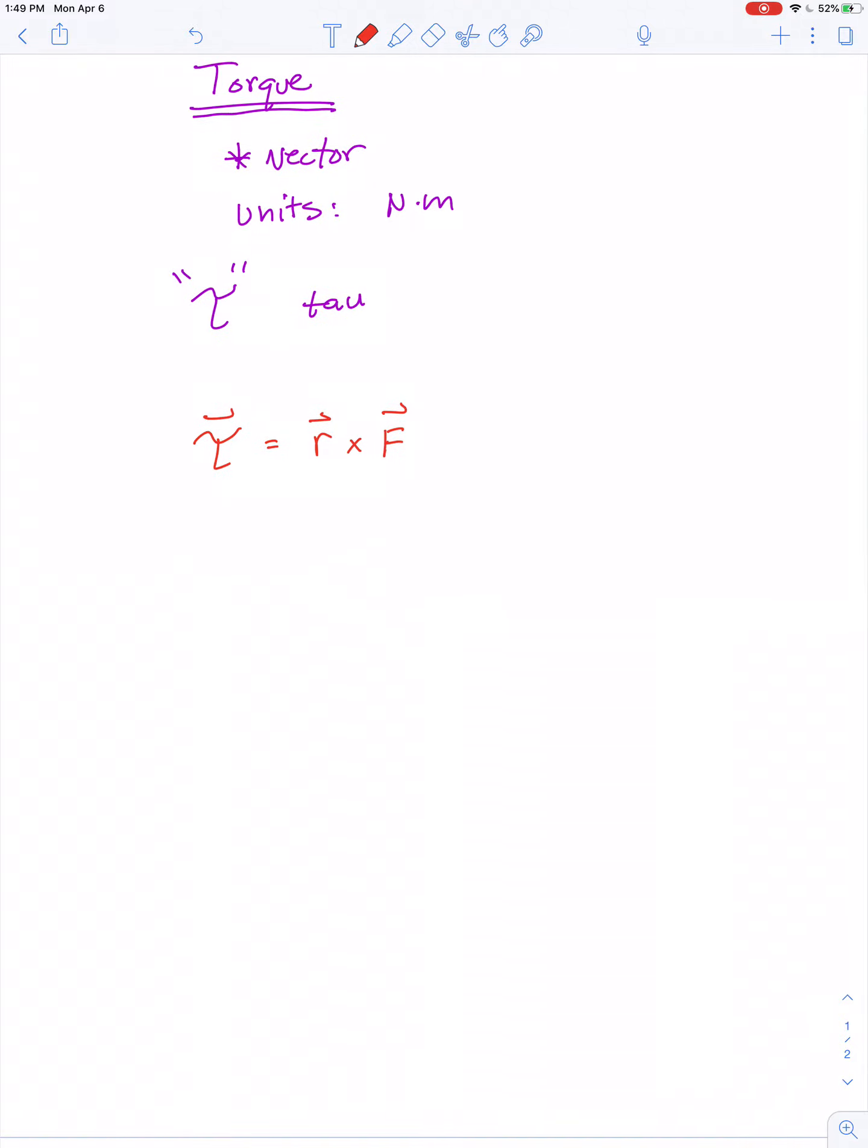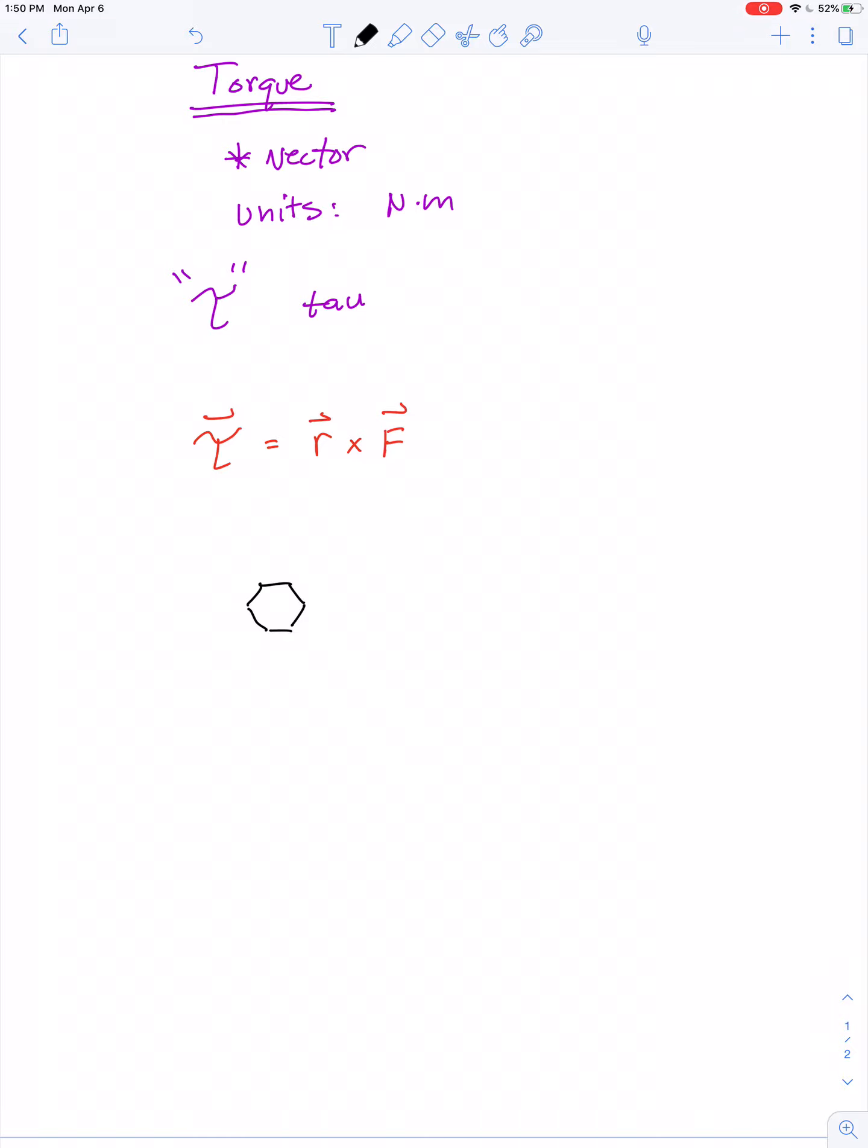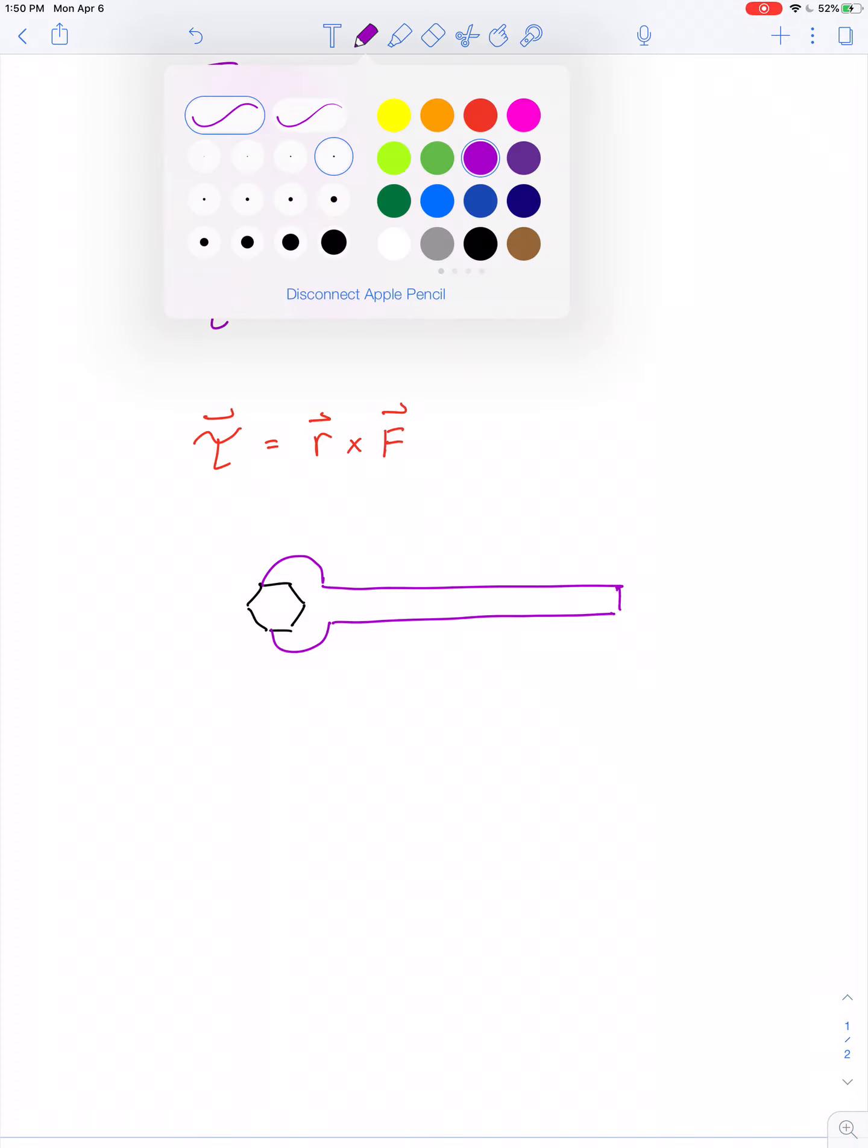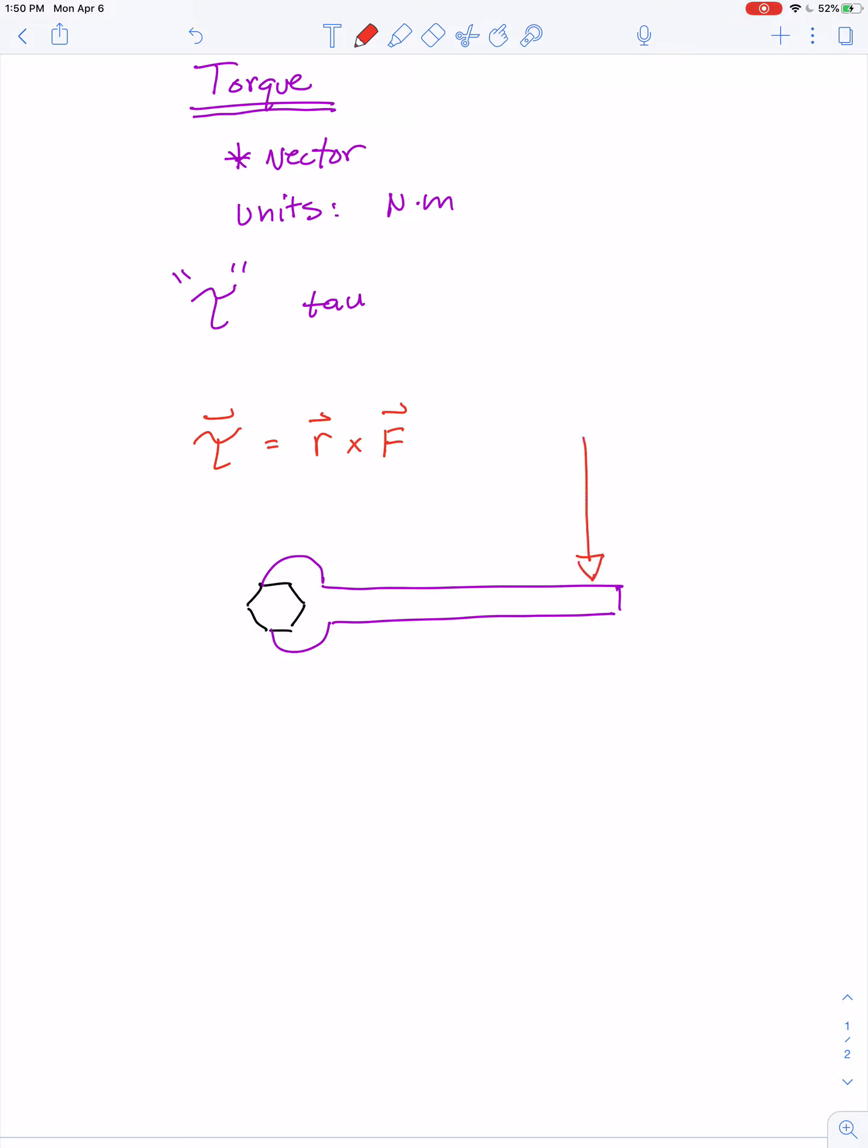An example would be if you had a bolt that you were trying to make tight. A lot of our bolts are hexagonal, so we've got a hex bolt and a wrench. If you try to make something tight, righty-tighty, you might push on the wrench in this direction.